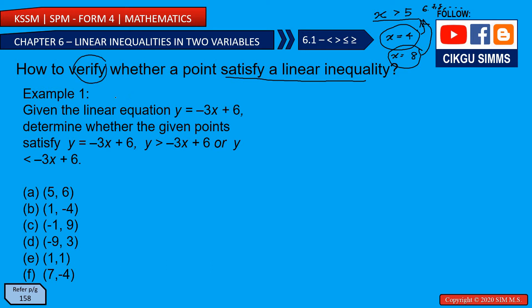Let's see example 1. Given the linear equation y = -3x + 6, determine whether the given points satisfy this. The only difference is equal, greater than, or smaller than. We have a number of points, and we need to see whether each satisfies the equation — equal — or satisfies one of the inequalities.